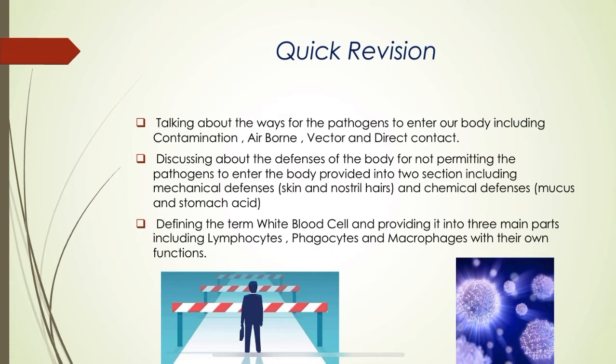We also defined the term white blood cells, abbreviated as WBCs, providing them in three main parts: lymphocytes, phagocytes, and macrophages, with their own chemical properties and functions. I recommend checking out my last video since it covers fundamental information about different types of pathogens and different types of WBCs.